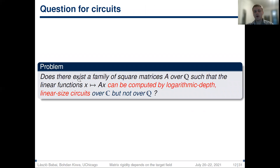This separation between strict and absolute rigidity raises the following question for circuits: is it possible that there exists a family of square matrices such that the corresponding linear functions can be computed by logarithmic-depth, linear-size circuits over the complex numbers but not over the rational numbers?